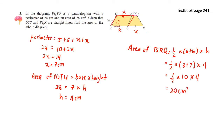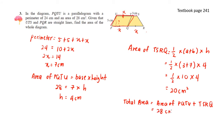To find the area of the whole diagram, we add both shapes. Total area equals area of PQTU plus area of TSRQ. So that is 28 cm squared plus 20 cm squared, giving us 48 cm squared.